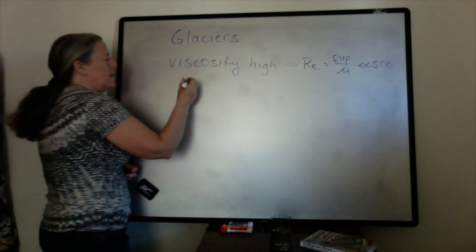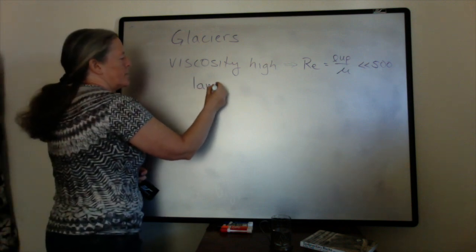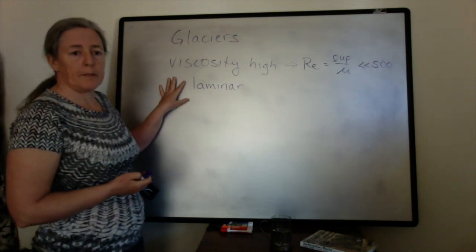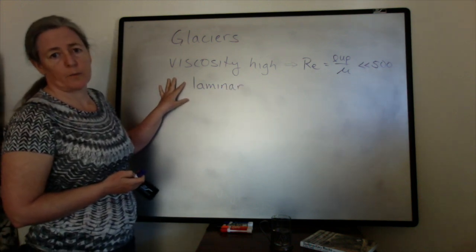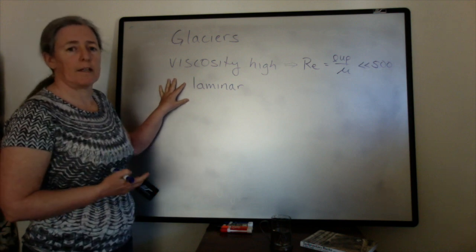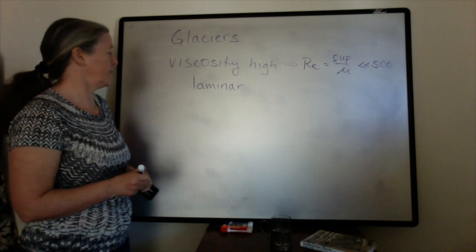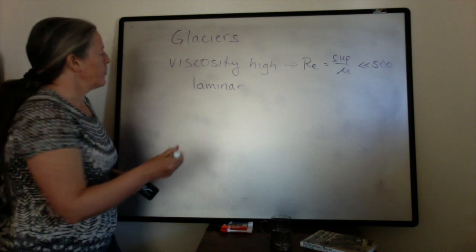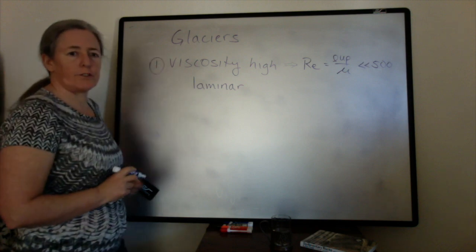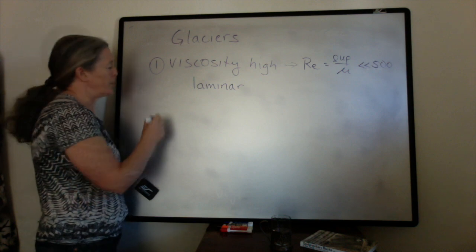So glaciers are laminar. The flow being laminar means that the transport of sediment by ice is fundamentally different than it is in a water or air type flow. This is one key aspect of glacier transport that's really important.